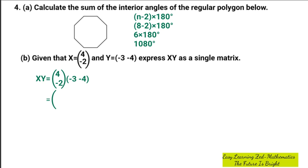Okay, so we're going to multiply 4 by negative 3. Then again, we're also going to multiply 4 by negative 4. Then we come down, negative 2 by negative 3. And again, we're going to have negative 2 by negative 4. Then we close bracket.